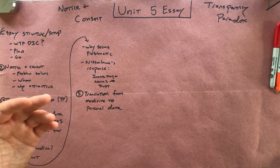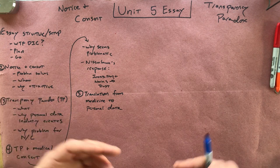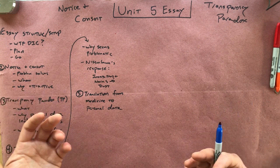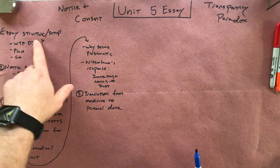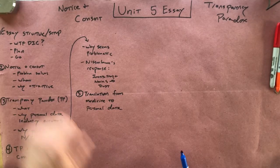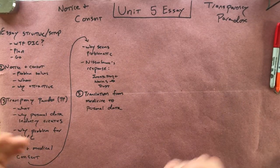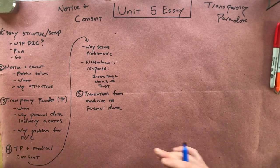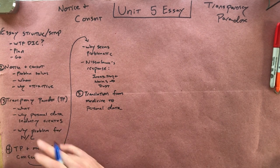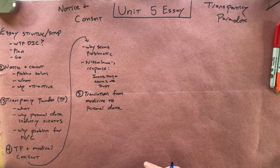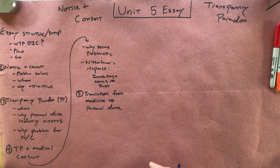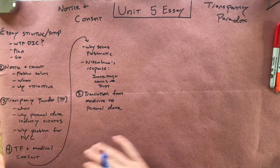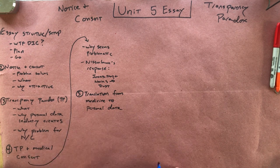Right up front, you want to start off with here's what the problem is that we're talking about — dealing with people's personal data and when people actually are legitimately consenting to data use. Then you want to tell the reader what the plan is for the paper. First, I'm going to talk about the notice and consent picture, then the transparency paradox, which seems to show that notice and consent doesn't work, going to show that a potential problem for the transparency paradox is not actually a problem, and talk about lessons we can learn from that.